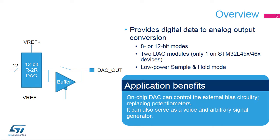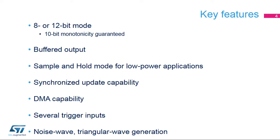The DAC can interface with external POTS or BIAS circuitry. It can also create voice and arbitrary signals. The digital-to-analog converter inside STM32L4 products offers simple digital-to-analog conversion in an 8- or 12-bit mode. 10-bit monotonicity is guaranteed. The DAC output can have a low-impedance buffer to drive external loads.